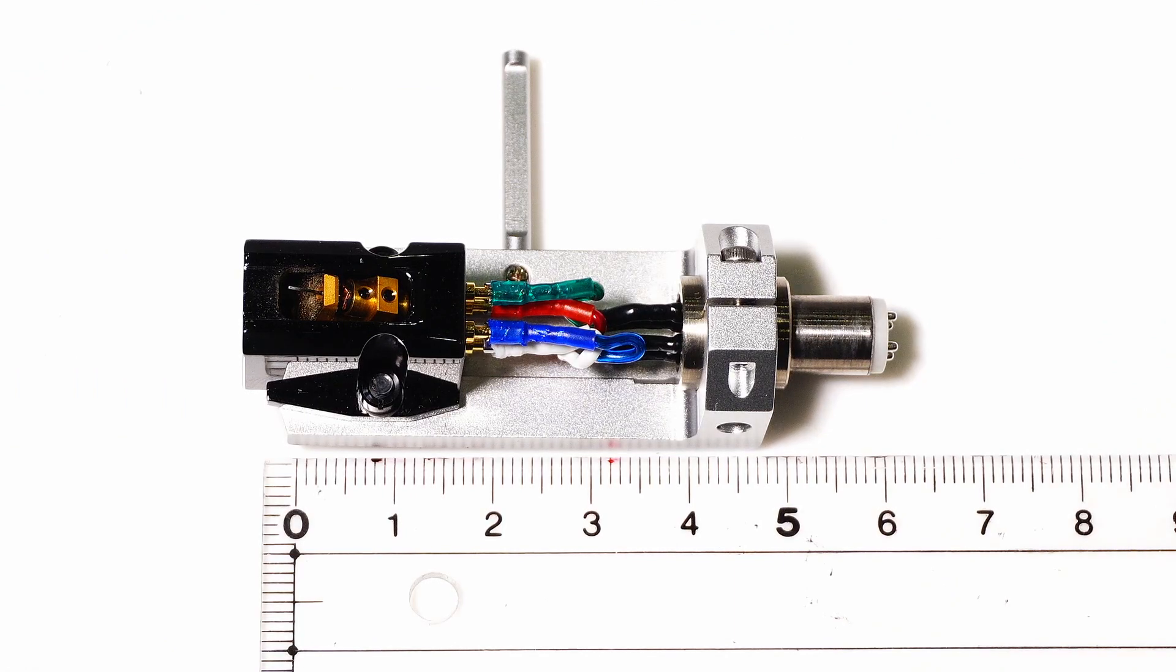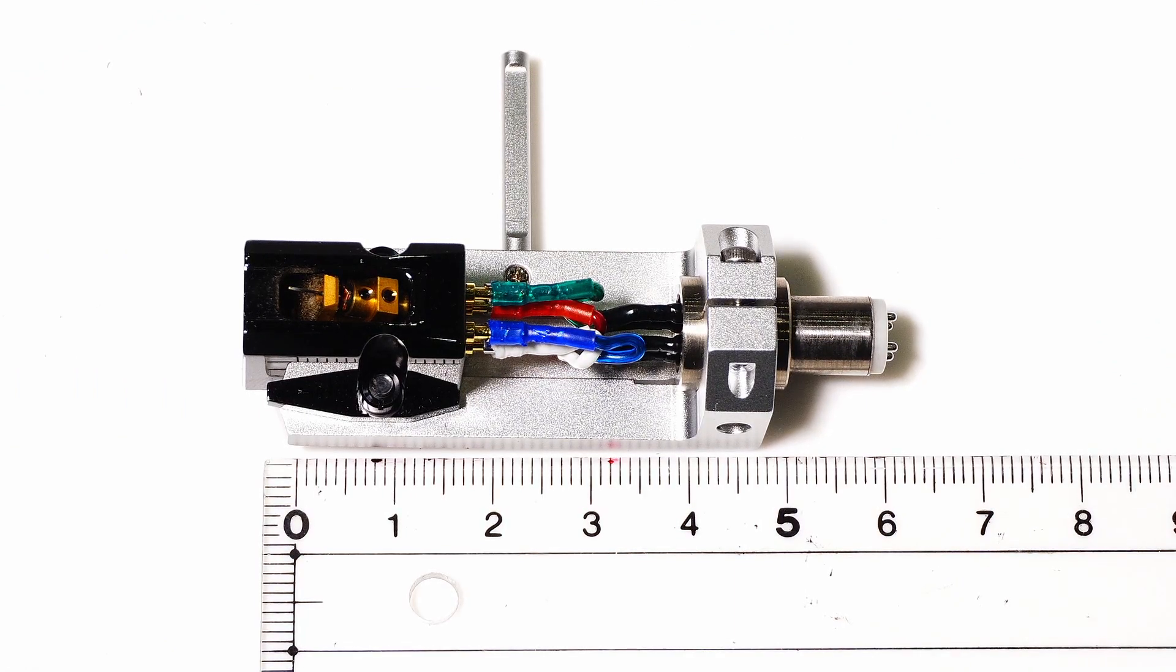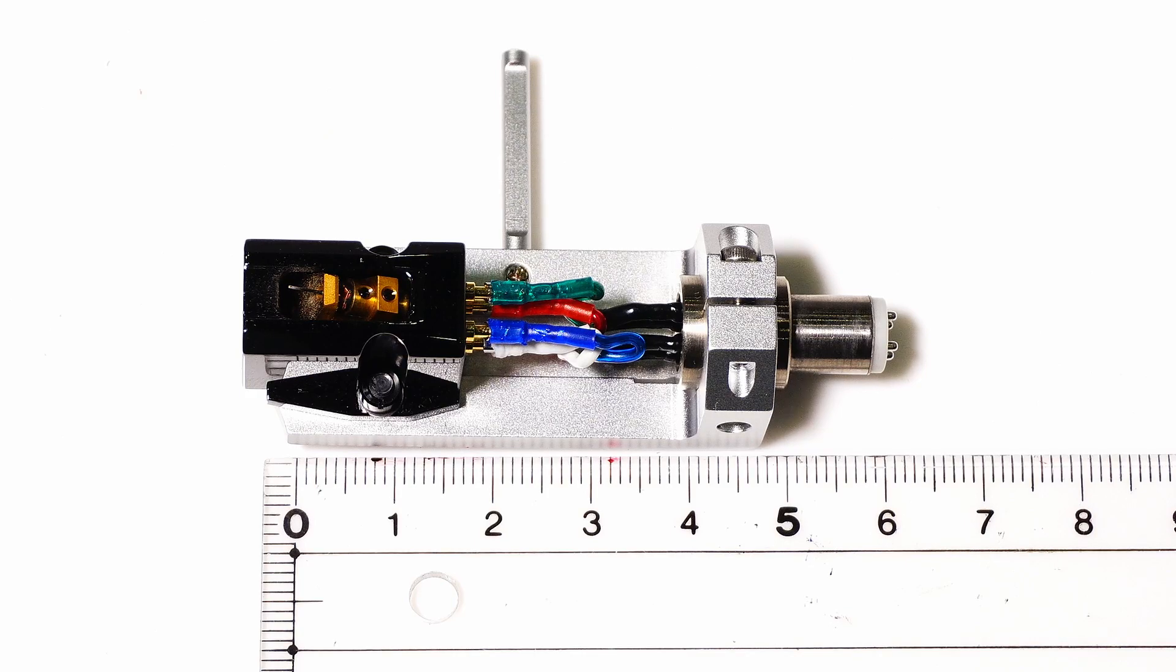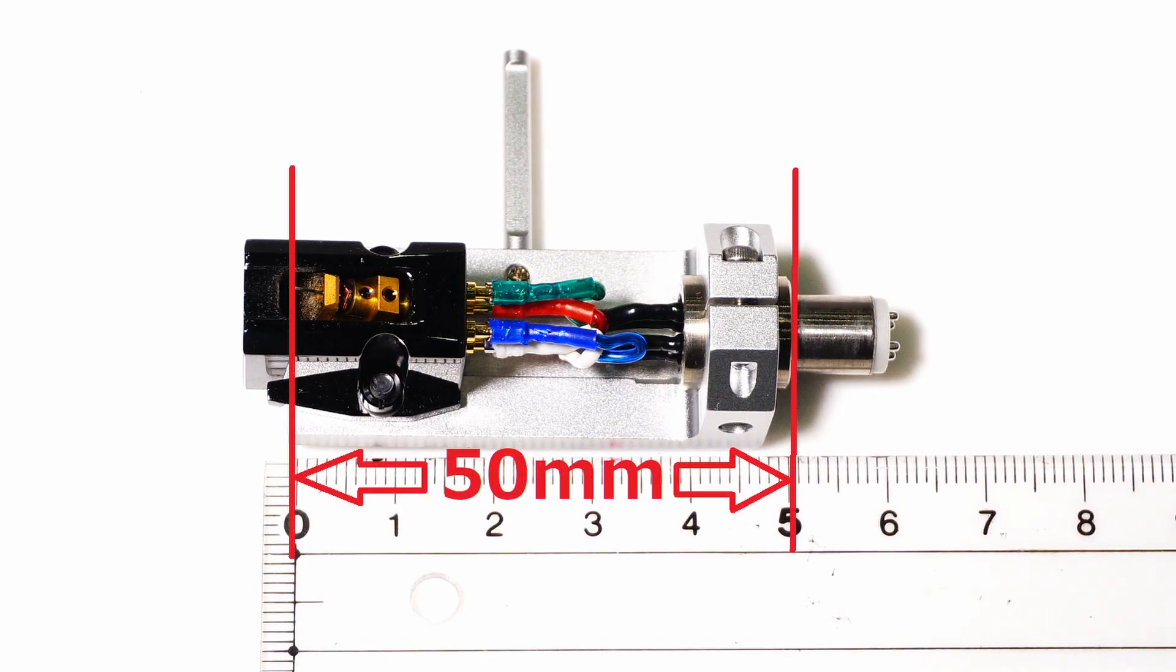Install the cartridge in the head shell. The distance between stylus tip to the illustrated connector ring should be precisely 50mm. Make sure that the side of the cartridge is parallel to the side of the head shell.